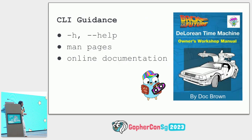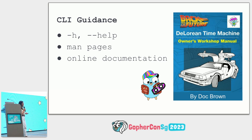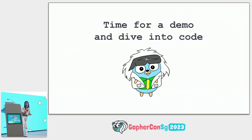Now let's talk about some CLI guidance. It's important to add help text, man pages, and even online documentation. Online documentation is great for advanced cases and discussions around your CLI. It's really important to empower your users and make them feel they can go somewhere where someone can show them the ropes. Within the movie, thank goodness for Doc Brown and also for the DeLorean Time Machine manual. Finally, let's go to the demo.